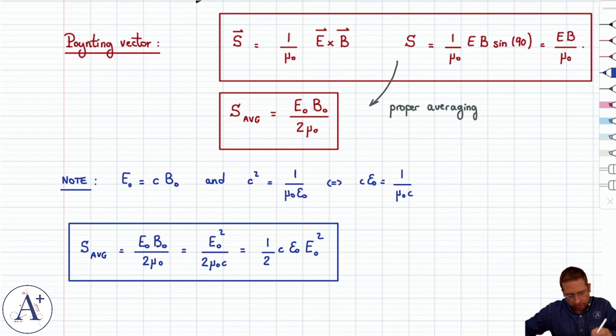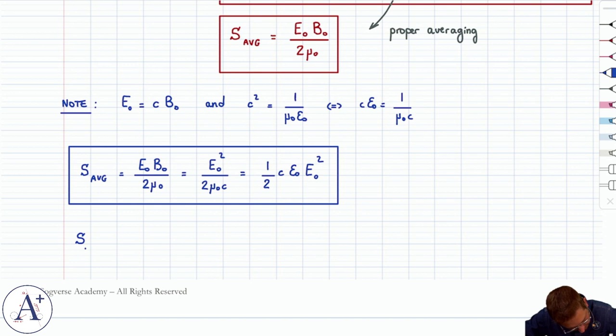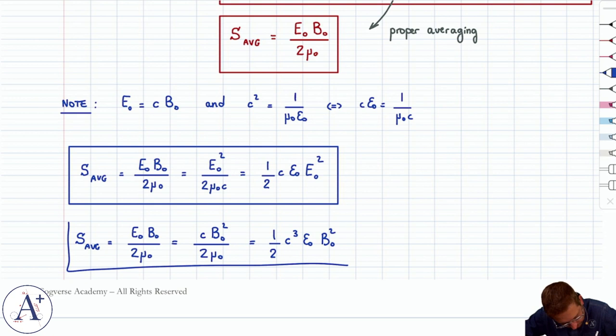Of course, you can do the same thing with B₀, because you can define S average and then express it solely in terms of B₀. So it's E₀ B₀ over 2μ₀, that's the definition. But then recall that E₀ is CB₀, so you get CB₀² divided by 2μ₀. And that's going to be equal to one half C³ε₀B₀².